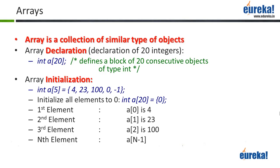Now that I've initialized my array, accessing each element is simple. The first element is a[0], the second is a[1]. So if I want to access the nth element, it will be a[n-1]. Please remember: int a[5] has 5 elements, but to access the fifth element you use a[4], because numbering starts from 0. So a[5] is not a valid access — if the size of your array is n, you can only access from a[0] to a[n-1].